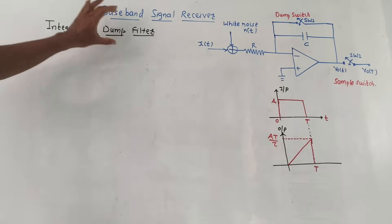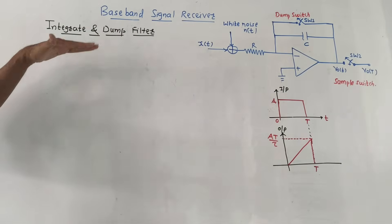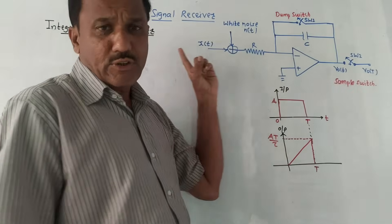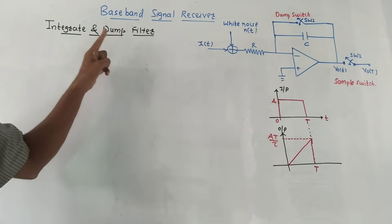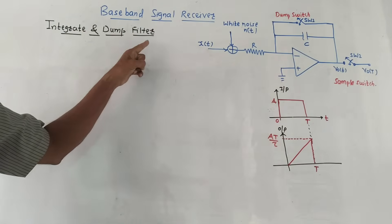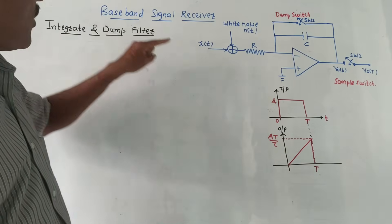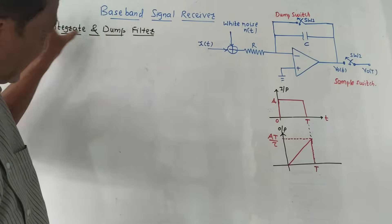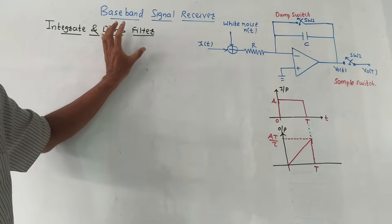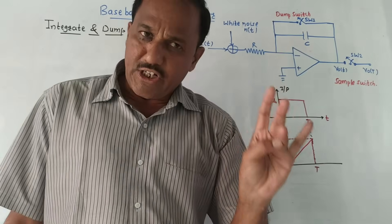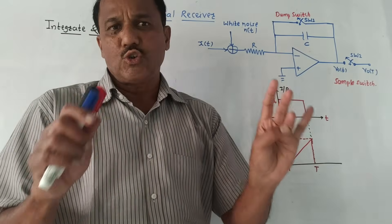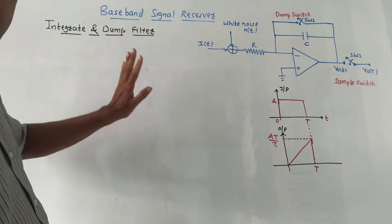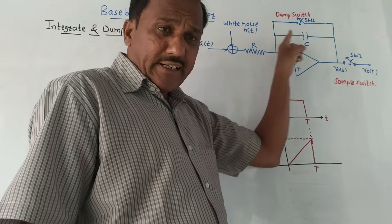First we will talk about the integrate and dump filter. From the exam point of view, questions related to this include: draw and explain the integrate and dump filter circuit, or draw and explain the baseband signal receiver, which is the same thing, or obtain the signal-to-noise ratio for the integrate and dump filter circuitry.